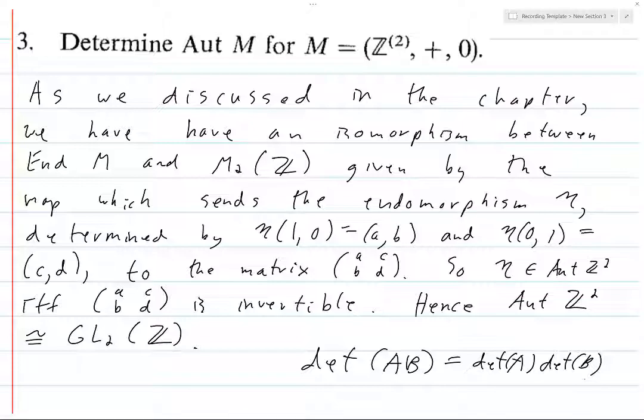So if you have two elements of GL₂(ℤ), call them A and B, then their determinants are non-zero. So you multiply these determinants together, you get a non-zero value, but that's also going to be the determinant of the product of matrices. So there you go, the automorphism ring is isomorphic to the general linear ring, and this completes our proof.